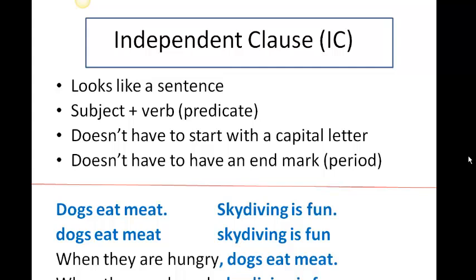Let's look at 'Skydiving is fun.' I can write it in two ways. Both are considered independent clauses, but only the one with the capital letter and the period is considered a sentence. So when would we use an independent clause without capitalization and an end mark? We would use it when you are hooking it on to another group of words. For example: 'When they are hungry, dogs eat meat.' 'When they are bored, skydiving is fun.'